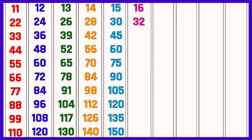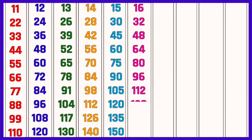Table of 16: 16 ones are 16, 16 twos are 32, 16 threes are 48, 16 fours are 64, 16 fives are 80, 16 sixes are 96, 16 sevens are 112, 16 eights are 128, 16 nines are 144, 16 tens are 160.